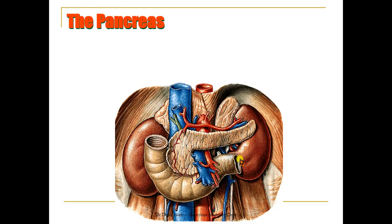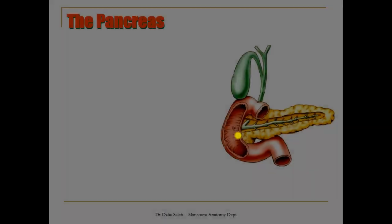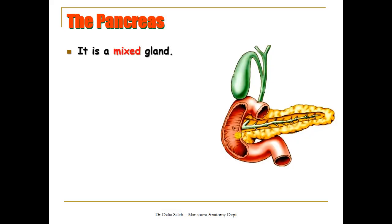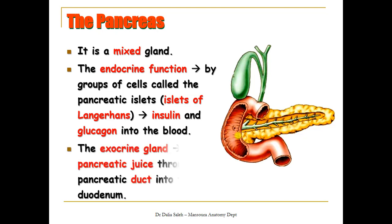The pancreas is a soft, lobulated organ that lies across the posterior abdominal wall. It is a mixed gland — both endocrine and exocrine. Its endocrine function is carried out by groups of cells called the pancreatic islets (islets of Langerhans), which secrete insulin and glucagon into the blood. The exocrine part secretes pancreatic juice through the pancreatic duct, which opens into the duodenum.